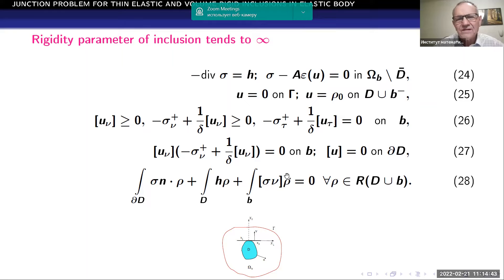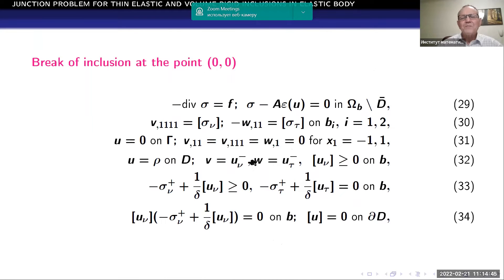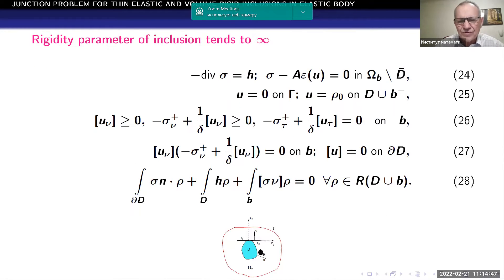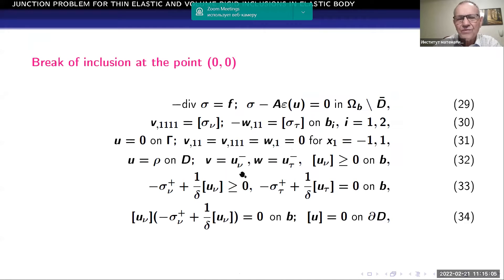And the last step corresponds to the situation when we have a break of the inclusions at this junction point. So B1 and B2 are independent, no connection between B1 and B2. In this case, we have the following problem formulation. The damage parameter is fixed.